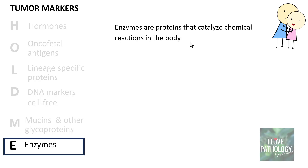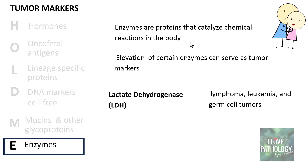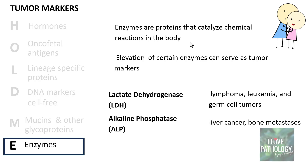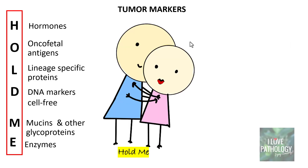Lastly, enzymes. Enzymes are proteins which catalyze chemical reactions in the body, but elevation of certain enzymes can serve as tumor markers. Common examples include lactate dehydrogenase (LDH), elevated typically in lymphoma, leukemia, and germ cell tumors; and alkaline phosphatase, which can be elevated in liver cancers and bone metastasis. I hope the classification of various tumor markers is made simple by the mnemonic HOLD ME — please don't forget it.